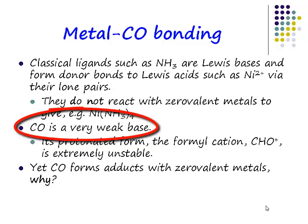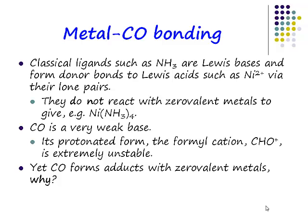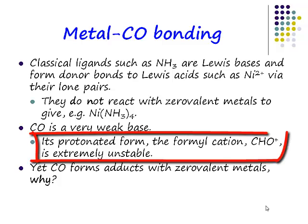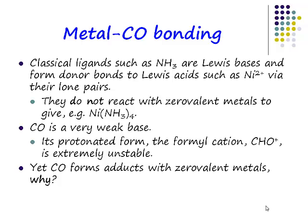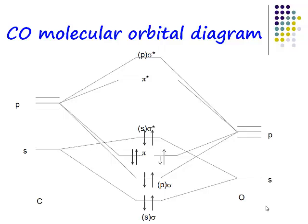In fact, whereas you can readily protonate ammonia to make an ammonium cation, you need a very strong acid to protonate carbon monoxide to make the formyl cation. That species is not very stable at all. So it's certainly not the case that carbon monoxide is a spectacularly strong base — far from it.